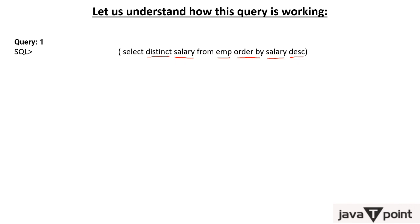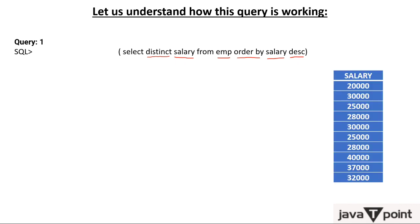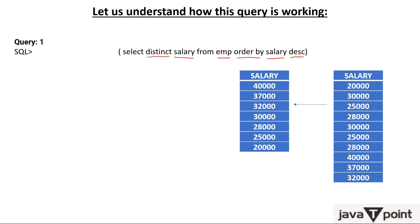After running the inner query, we get the salary list arranged in descending order with no duplicates, because we selected DISTINCT salary. Originally there were duplicates in the table, but after applying DISTINCT, there is no duplicacy.